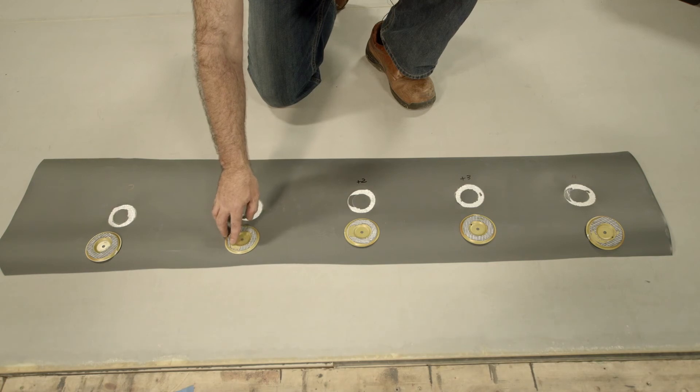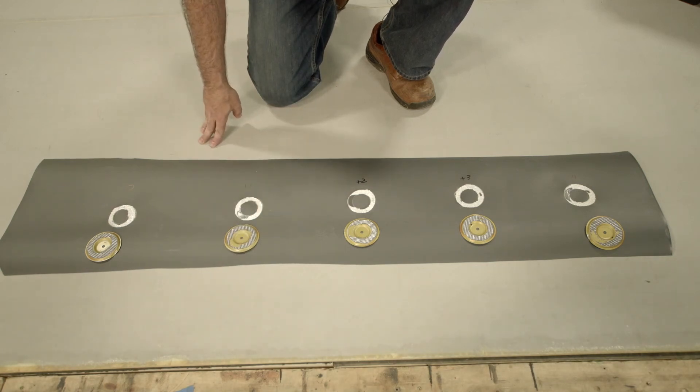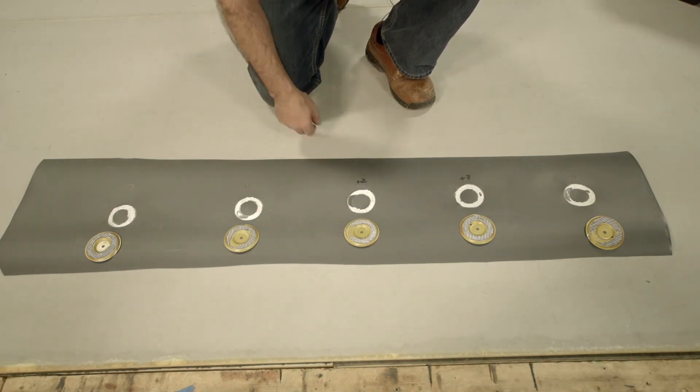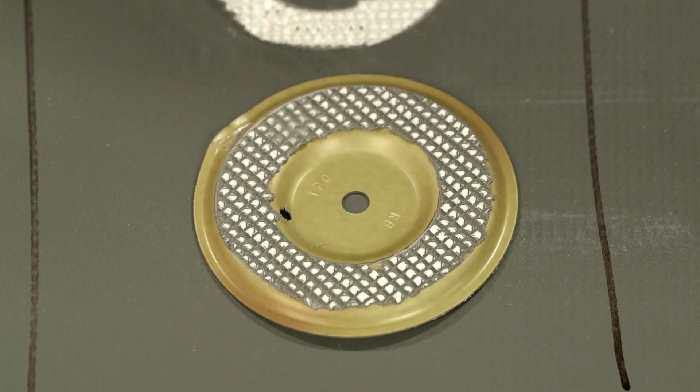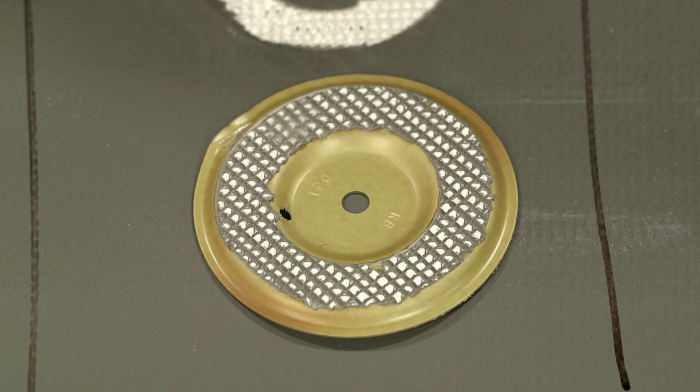Moving to our plus one, we see some voids here in our 360 degree mark. The same thing here with our plus two, we still see some voids, but look what happens when we stepped up to our plus three. We got what I would consider an optimal bond. 360 degree coverage of that membrane adhered to the top side of the Rhino Bond plate.